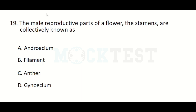The male reproductive parts of a flower — the stamens — are collectively known as — Option A: Androecium, Option B: Filament, Option C: Anther, Option D: Gynoecium. The answer is Androecium.